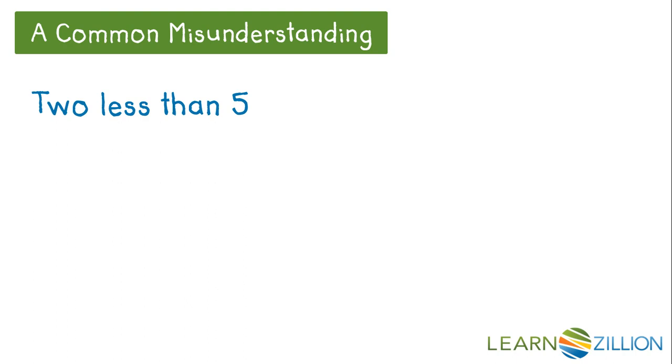A common misunderstanding is to not really take the time to understand what the verbal description means. For example, in this one you might see 2 and write the number 2. You might see less and think about subtraction. And then you might see the number 5 and write down a 5. But 2 minus 5 means 5 less than 2. Don't make that mistake. To write 2 less than 5, it's 5 minus 2. Remember our example with the dollars.